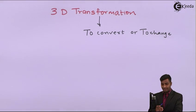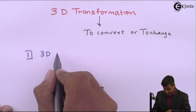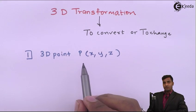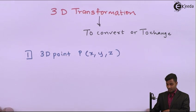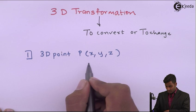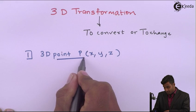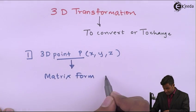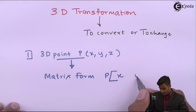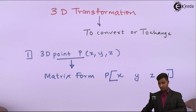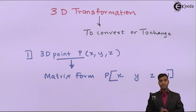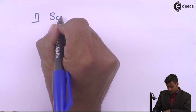First we will convert a 3D point into matrix form. We will name the 3D point as P(x, y, z). In 2D it had x and y because it had two planes, but here we will have three axes: x, y, z. For converting this point P from coordinate form into matrix form, we write it as P = [x, y, z, 1]. This is the conversion of coordinate form into matrix form.